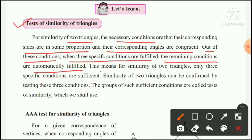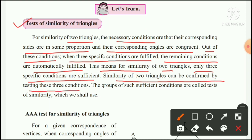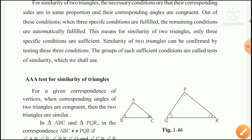This means for the similarity of two triangles, only three specific conditions are sufficient. The similarity of two triangles can be confirmed by testing these three conditions. The group of such sufficient conditions is called a test of similarity. The first test is the AAA test.